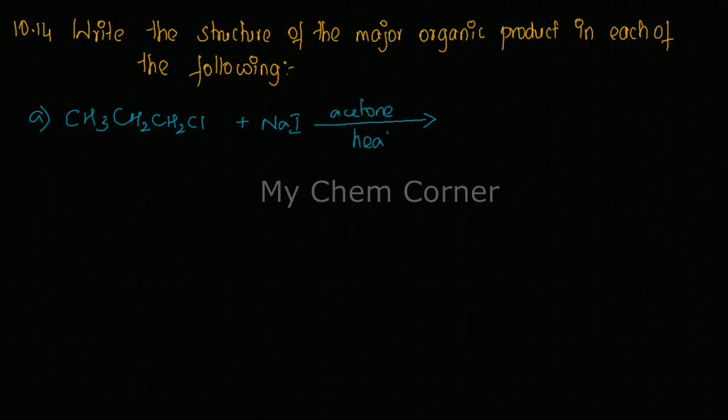First thing we need to find the product and draw the structure of the major organic product. Now in this case, first thing you need to identify is you have a hydrocarbon part here and you have a halogen. Similarly, you have a metal and a halogen.